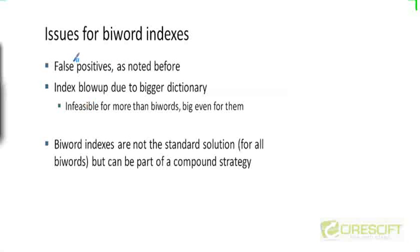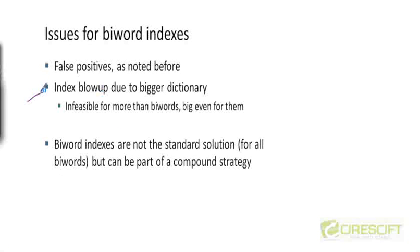Let's look at what are the problems with biword indexes. Biword indexes do not guarantee that all documents returned will have the exact phrase. If your query is a long phrase query with four or five terms, you will be doing an AND operation on a bunch of biwords, and it is not necessary that a document satisfying that long AND query will have all those terms right next to one another. The other problem is that the size of your dictionary is going to blow up if you build a biword index, and since the dictionary needs to be stored in main memory, it may be infeasible.